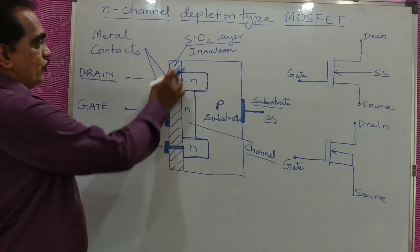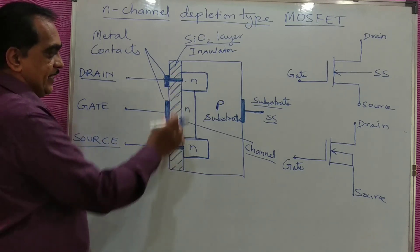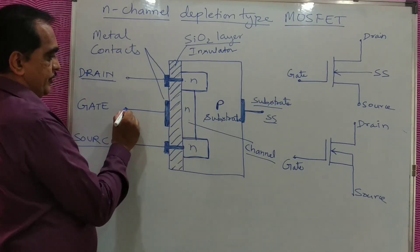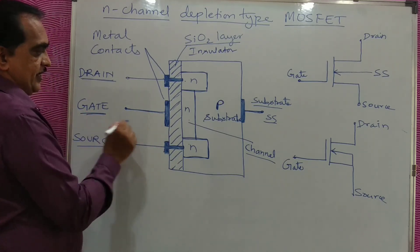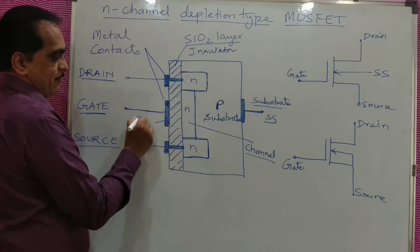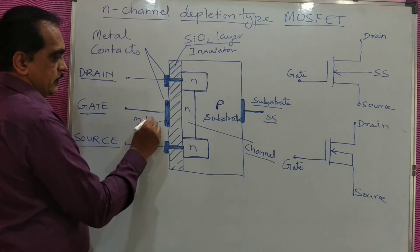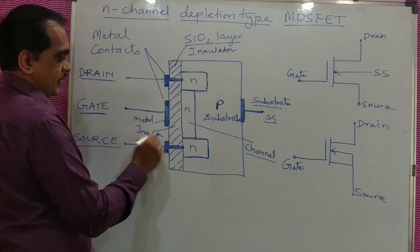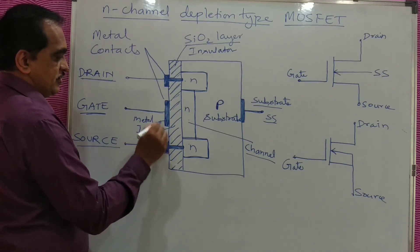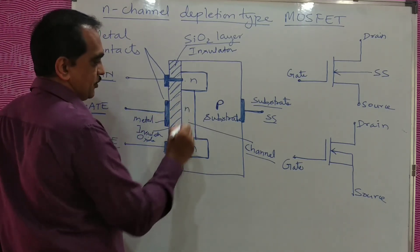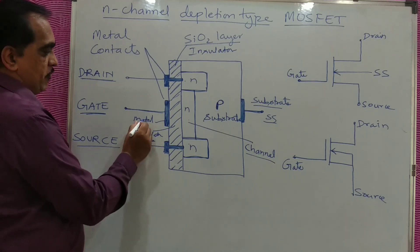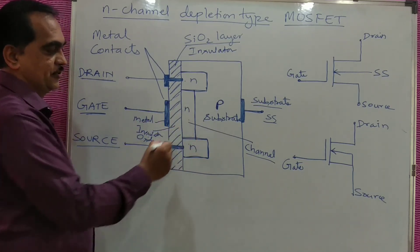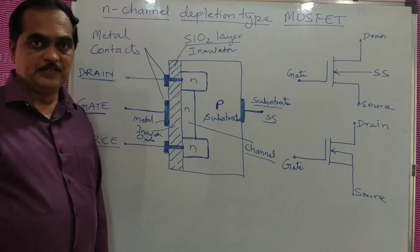This oxide layer is in between the metal and semiconductor for the gate. For the gate, you have a metal here, an insulator — that is oxide, silicon dioxide — and a semiconductor here. So it is Metal-Oxide-Semiconductor, M-O-S-F-E-T.